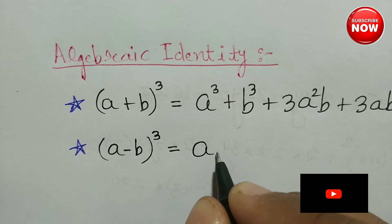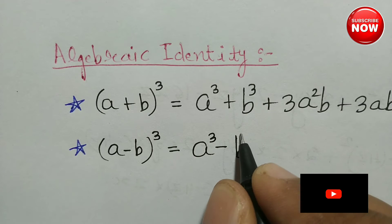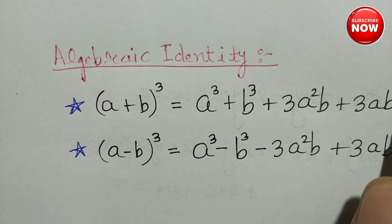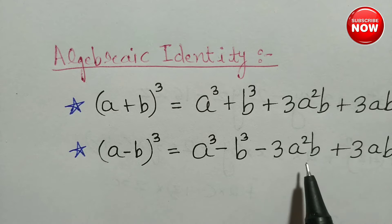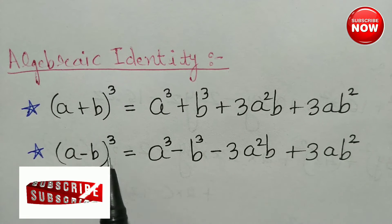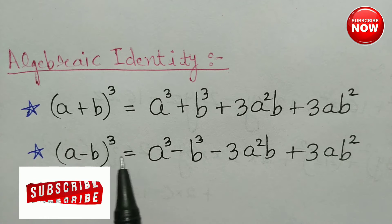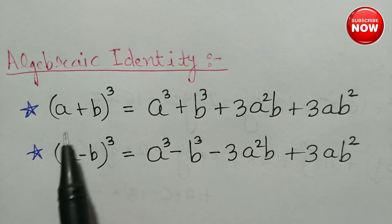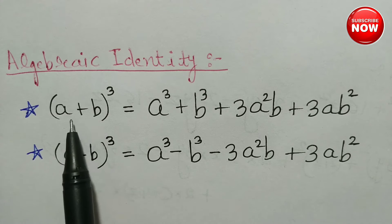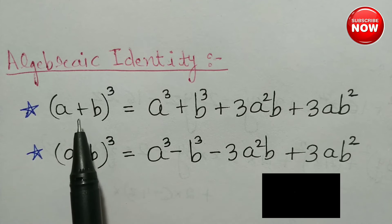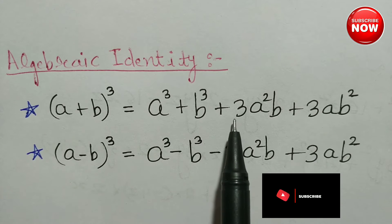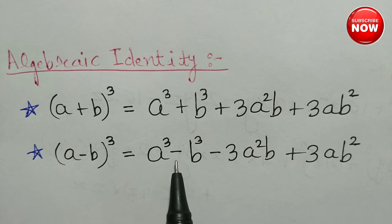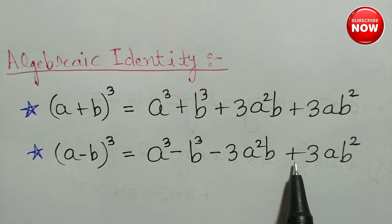a minus b whole cube होता है: a cube minus b cube minus 3a square b plus 3ab square — यह होता है a minus b whole cube का expansion. और a plus b whole cube is: a cube plus b cube plus 3a square b plus 3ab square. a minus b whole cube is: a cube minus b cube minus 3a square b plus 3ab square.